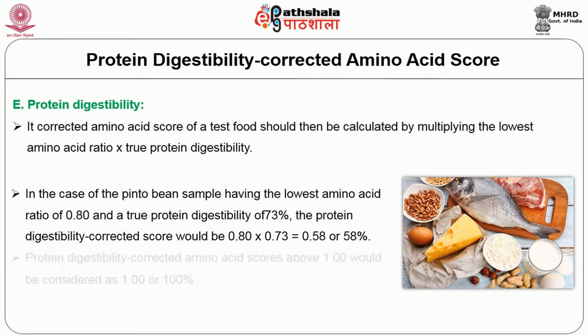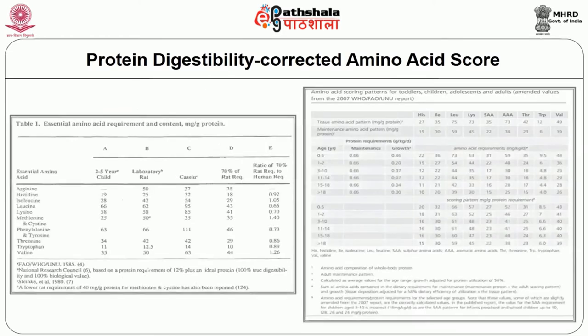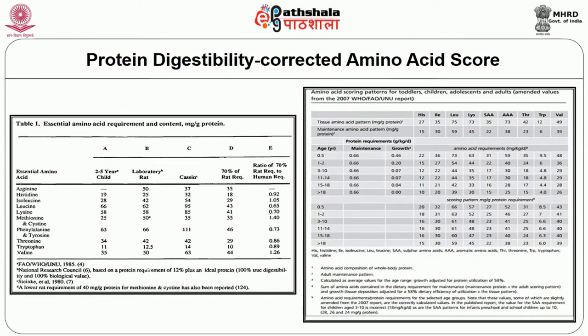A protein digestibility corrected amino acid score above 1 would be considered as 1 or 100 percent. Some of the essential amino acid requirements and contents in milligrams per gram of protein have been given according to the FAO, WHO, and UNU 1985 reference.